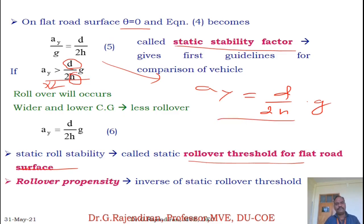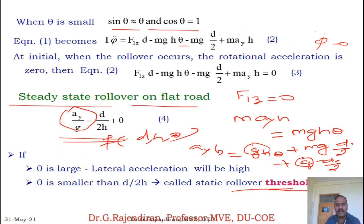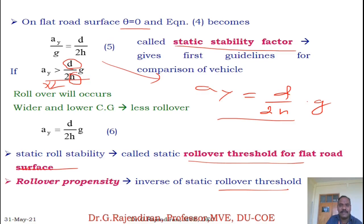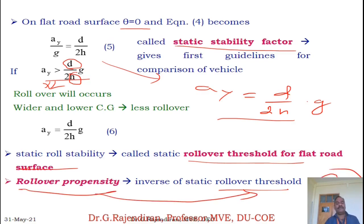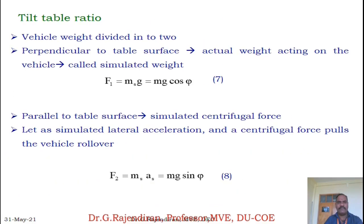There is another term called rollover propensity, which is the inverse of the rollover threshold. D/2H is the rollover threshold, and its inverse 2H/D is the rollover propensity.